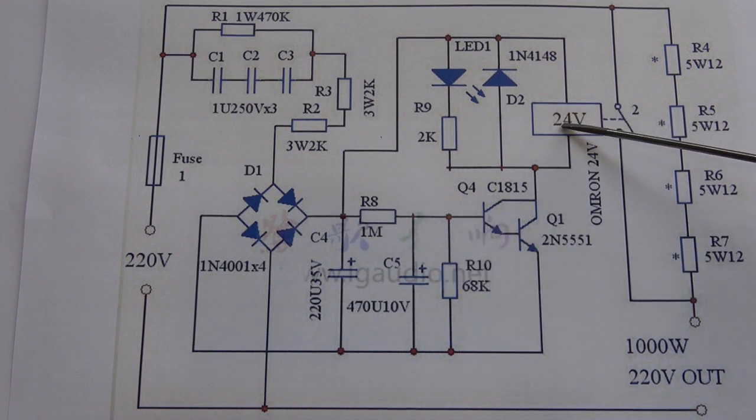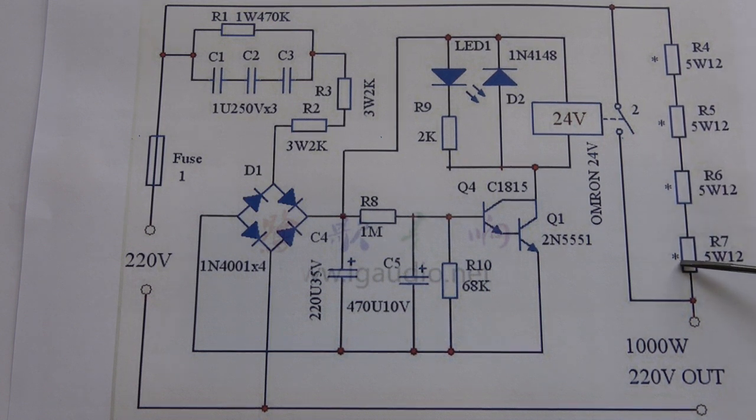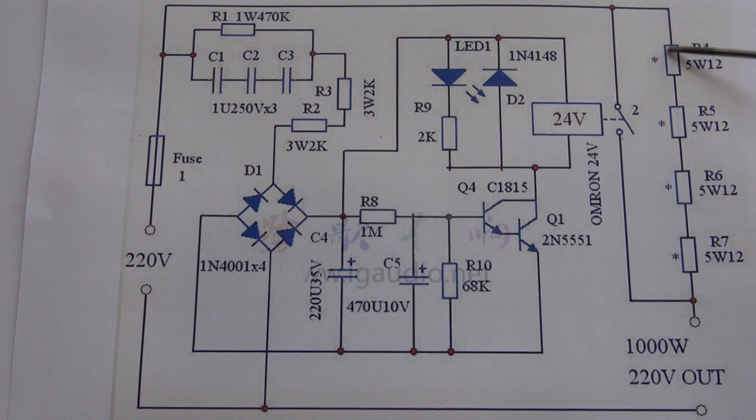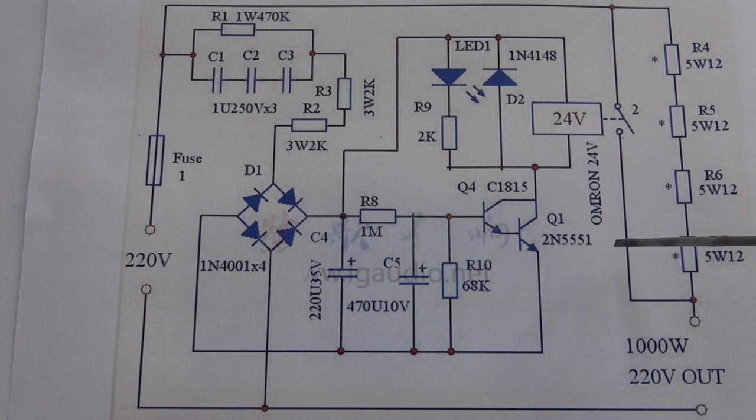When the relay pulls in it shorts out these four big resistors. Now this is what provides the current limiting. Again there's four in series partly to dissipate the power and partly because you have got mains voltage across them. Don't be tempted to use this on a switch mode power supply as they often have their own surge protection. So this is purely for transformers.